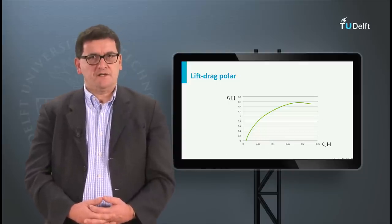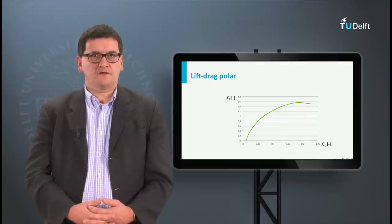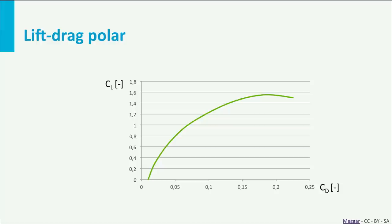If we use the CL and CD curves, we can construct a so-called lift-drag polar. In this curve the lift coefficient is plotted as function of the drag coefficient. From such plots the most efficient flying condition can be retrieved.